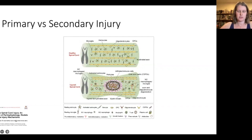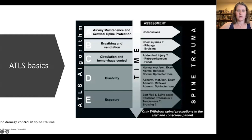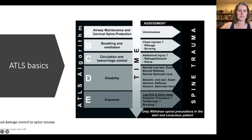Preventing secondary injury is a huge part of spinal cord injury management, which we largely accomplish through medical rather than surgical means. All spinal cord injuries are generally going to be traumas, so while ATLS is outside the scope of this talk, it is important to emphasize that you always treat these traumas like every other trauma — using the ABCDEs of trauma, which you can see here. ATLS has excellent interactive courses for certification in this care.